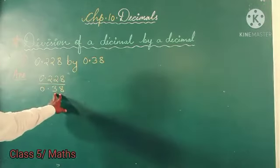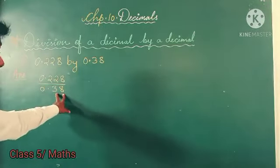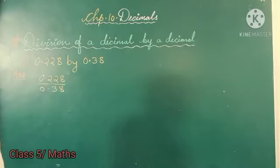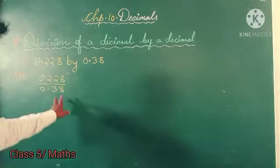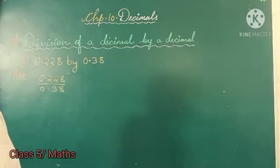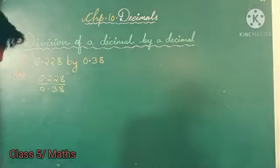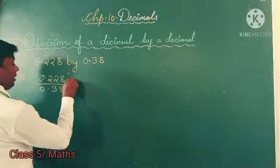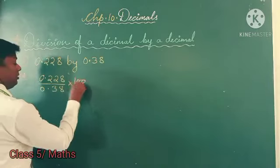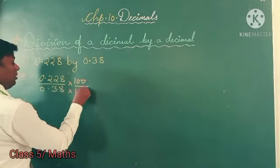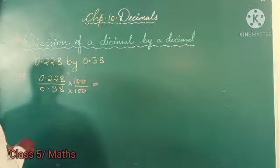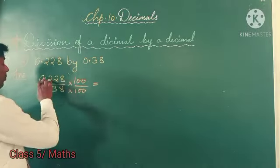Here we will multiply the answer by 100. If we multiply by 100, the decimal point will move 2 places.